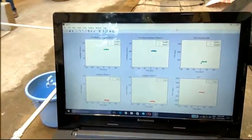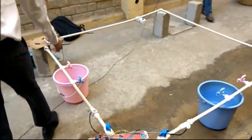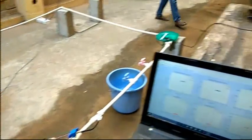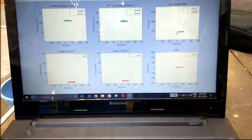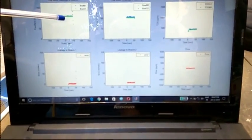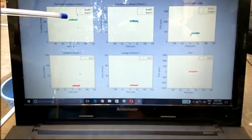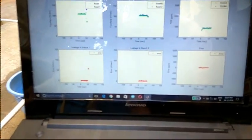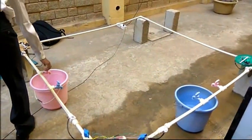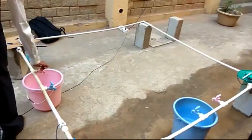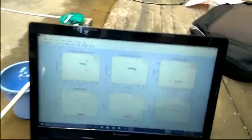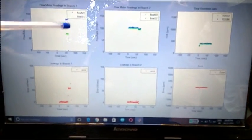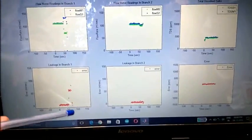Now we will simulate leak in branch 1. Now we can see that the flow meter readings in the master and slave changes. So does the error here. Now we will turn off the leak. So now the graph will return to the original value. It comes back to the same reading. And the error drops to 0.